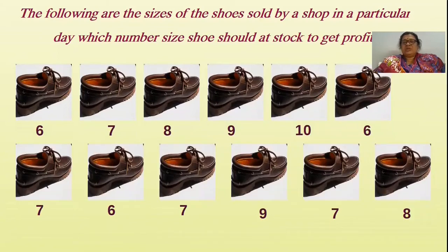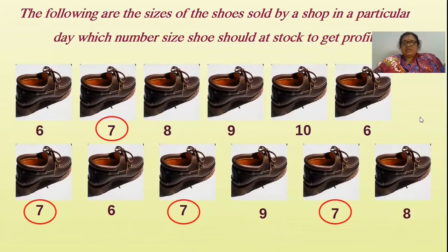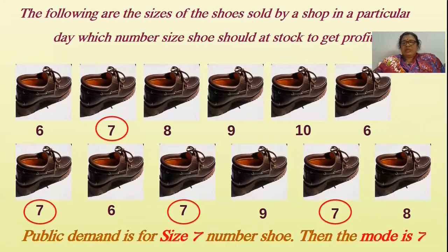Which numbered size should be kept at stock to get maximum profit? Which number is on demand? The number 7. The public demand is for size 7 number shoe. Therefore the mode of the data is 7.